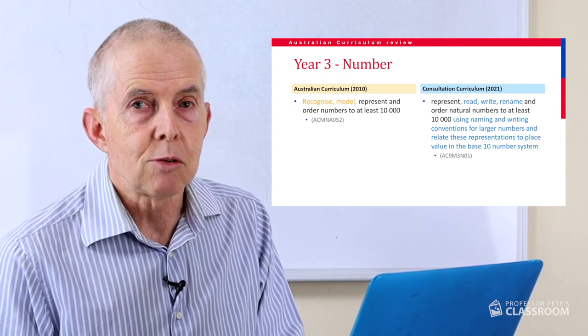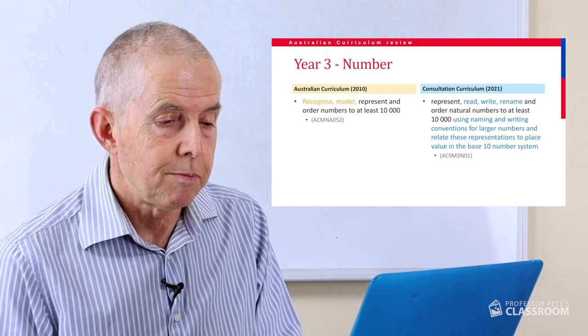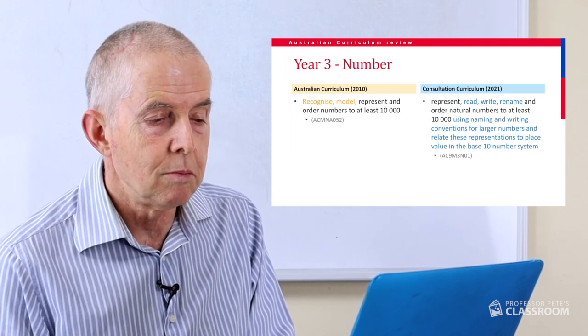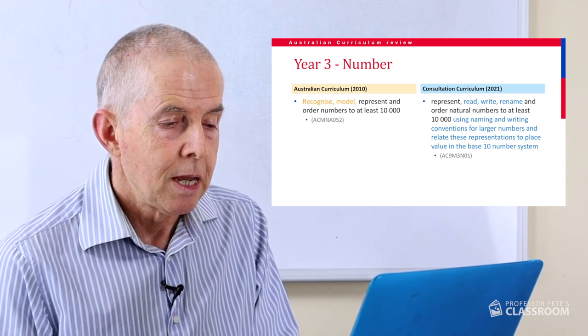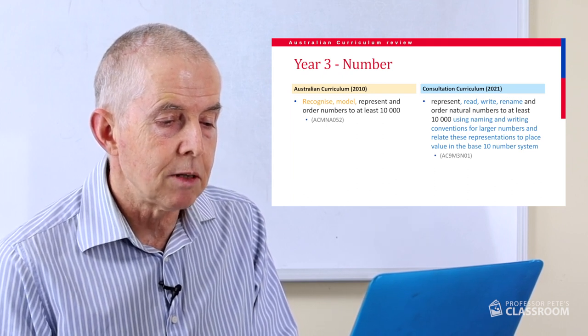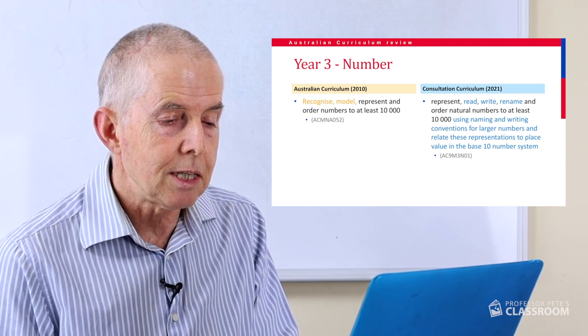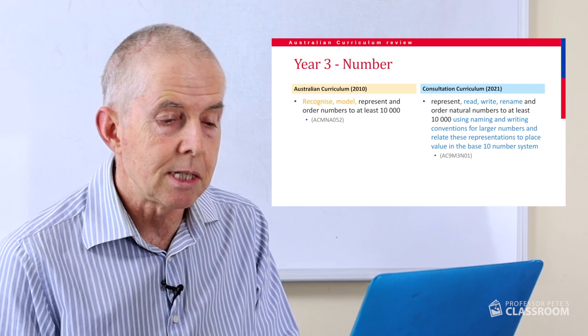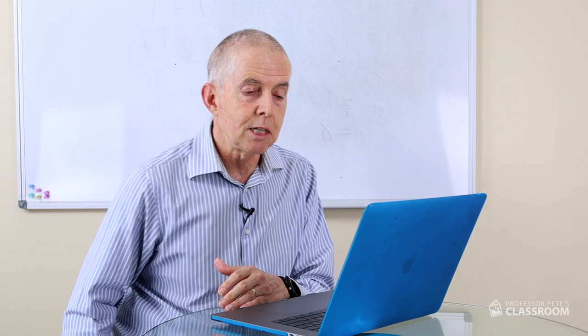The word 'natural' has been included — natural numbers are positive whole numbers, so that's a mathematical term inserted for clarification. And then we have using naming and writing conventions for larger numbers and relating these representations to place value in the base 10 number system. One thing I've really appreciated in the new proposed curriculum is the mentions of place value. Starting in Year 1, place value is mentioned again more strongly in Year 2, and again we see it here in Year 3. The previous curriculum omitted mention of place value specifically.